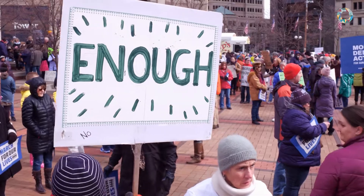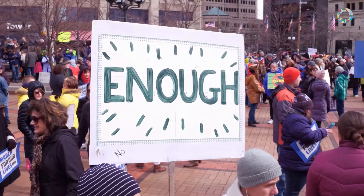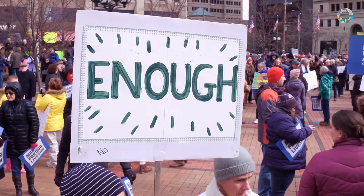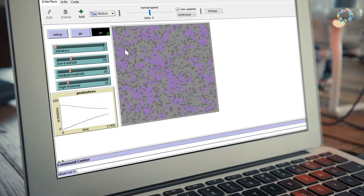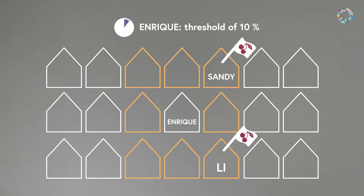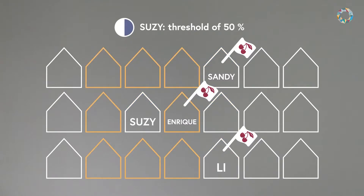As a case study you will investigate how people organise a protest and analyse it step by step, with the help of some simple models and simulations that illustrate how humans behave, how they influence each other and what unexpected outcomes may result from those behaviours.